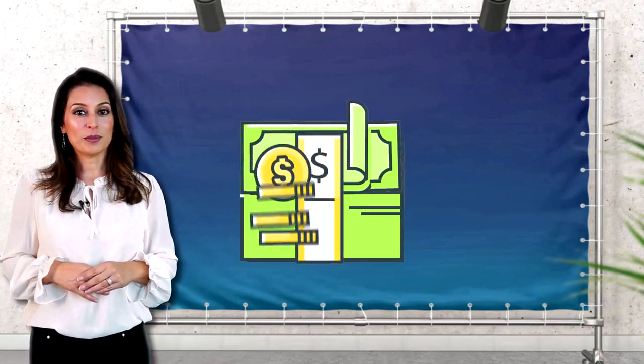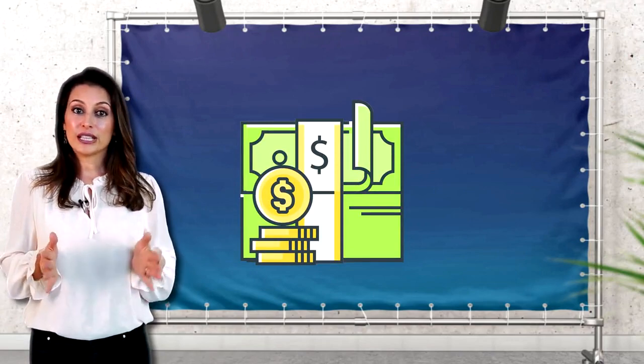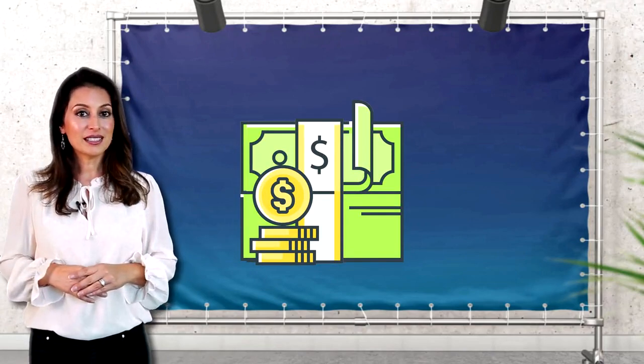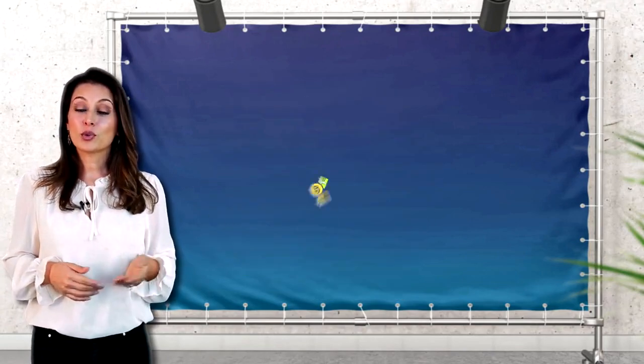This is the double spend problem. Any financial ledger must prevent Alice from spending her $5 more than once.